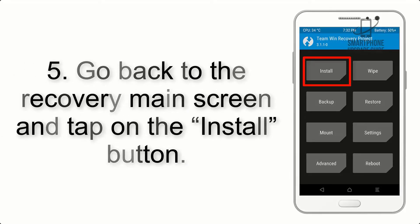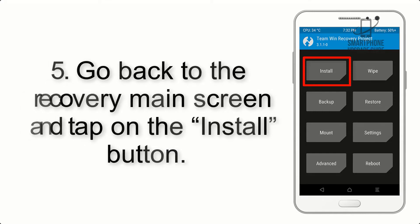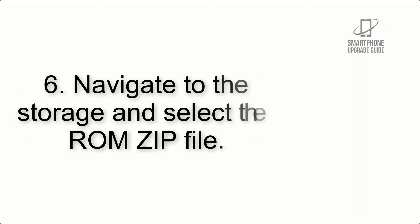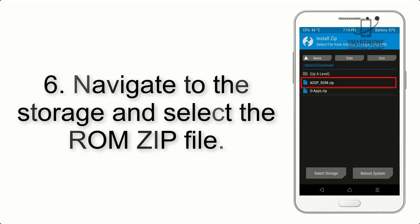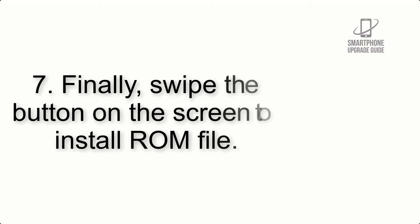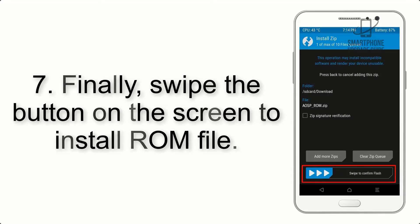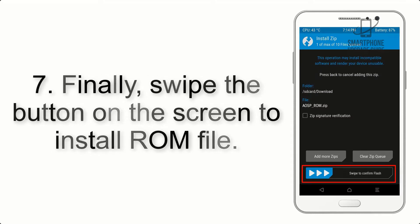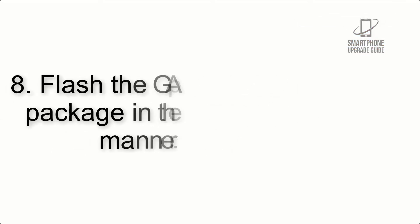Step 5: Go back to the recovery main screen and tap on the Install button. Step 6: Navigate to the storage and select the ROM zip file. Step 7: Finally, swipe the button on the screen to install the ROM file.